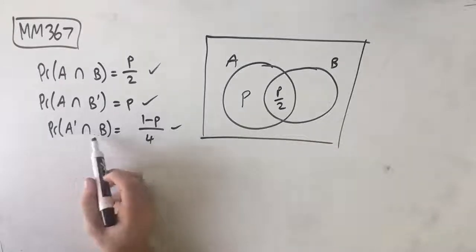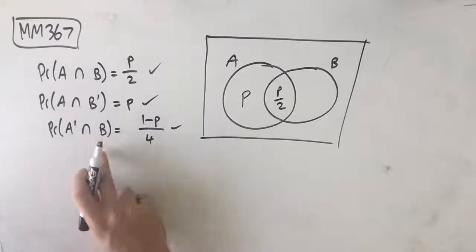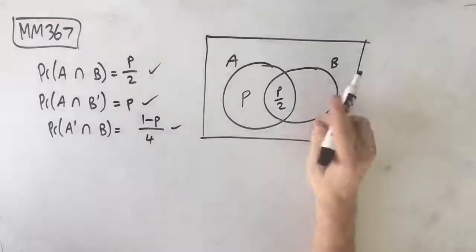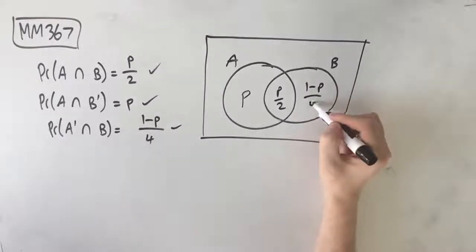Now, probability of A prime intersect B, so everything that's not in A that is in B is this bit here, which is 1 minus P over 4. Awesome.